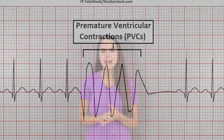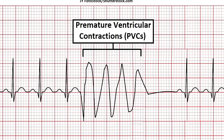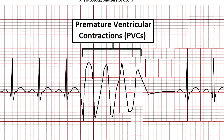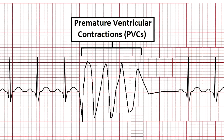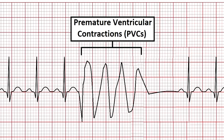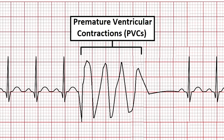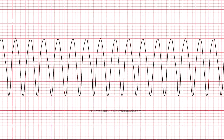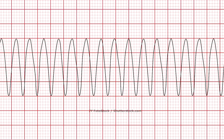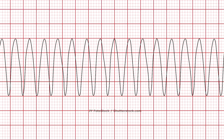One thing you want to remember about this rhythm is that it can be short in duration and quit. For example, a patient can have a bunch of premature ventricular contractions, also known as PVCs, together — like three or more in a row — and we refer to this as VTAC. Or this rhythm can be sustained, where it just continues.